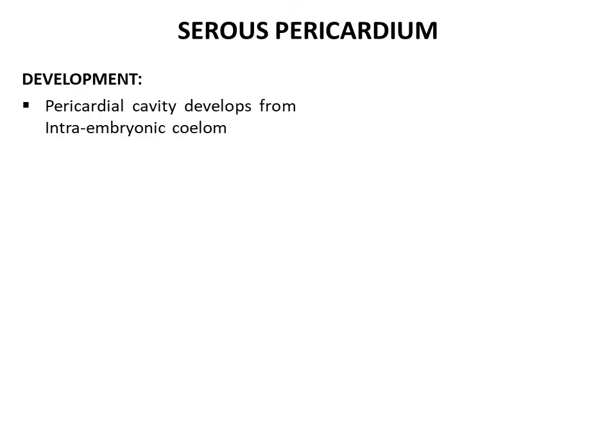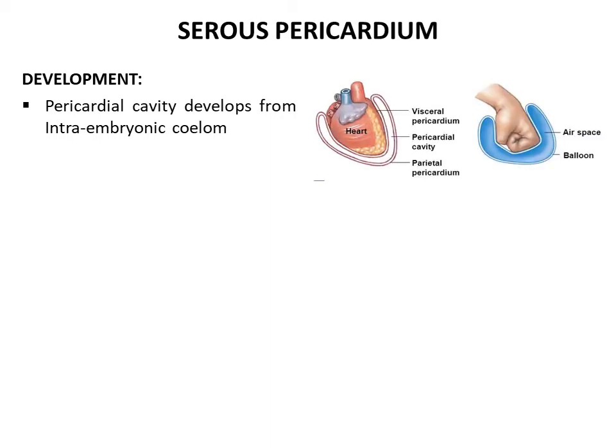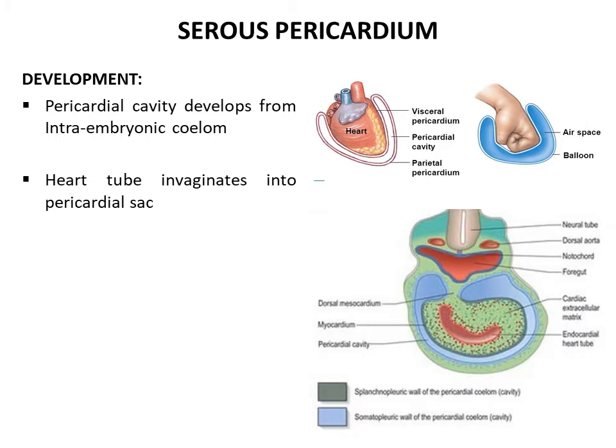A brief description of the embryology of the heart is important to understand the formation of the serous pericardium and the arrangement of its layers. The pericardial cavity develops from the intraembryonic coelom, a cavity of the lateral plate mesoderm, which subdivides into an outer somatopleuric layer and an inner splanchnopleuric layer. The heart tube develops in the floor of this pericardial cavity and invaginates into the pericardial sac, becoming surrounded by the splanchnopleuric layer.